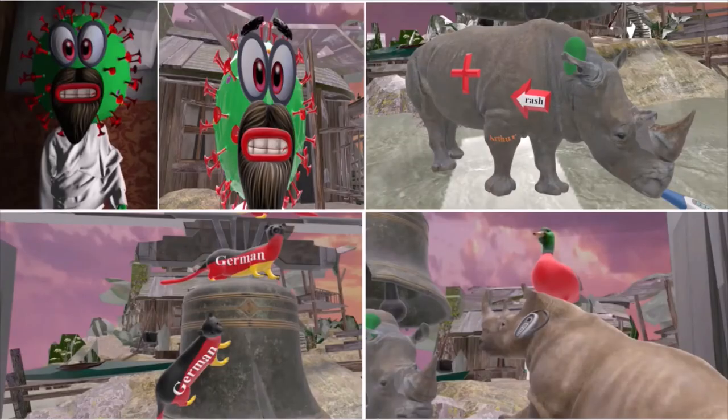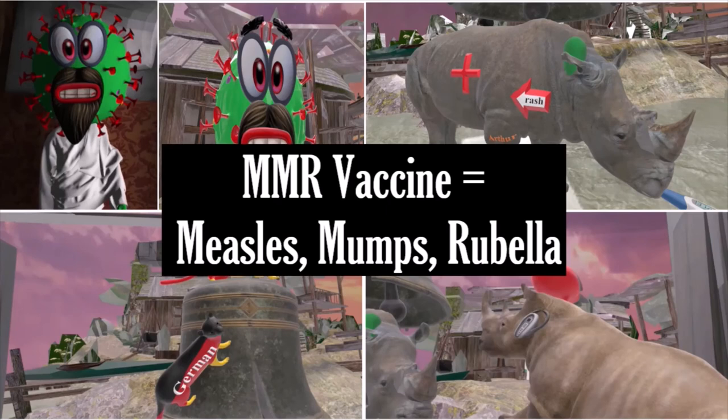These babies classically present with a blueberry muffin appearance, but I didn't put this in the scene since it's not necessary for diagnosis. To end, the MMR vaccine includes measles, mumps, and rubella. It's a live attenuated vaccine given at 12 to 15 months of age, and this vaccine has greatly reduced the incidence of congenital rubella.